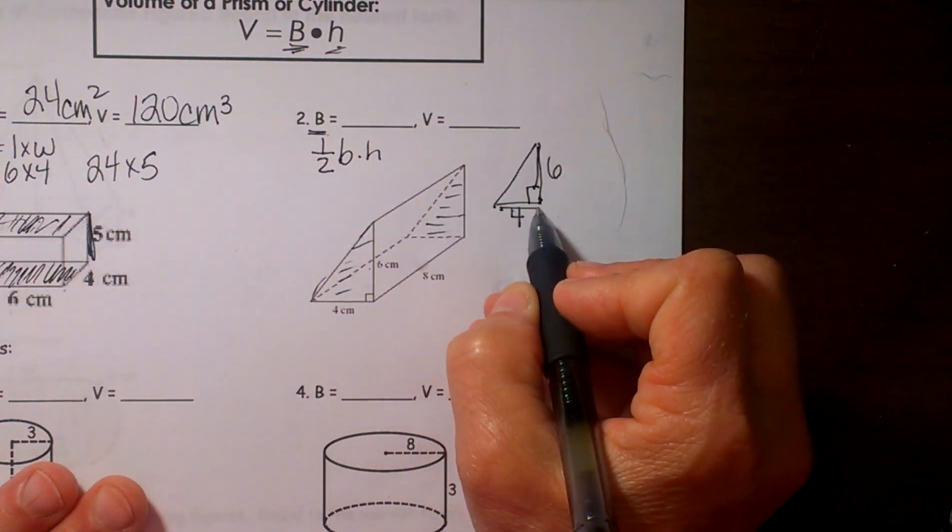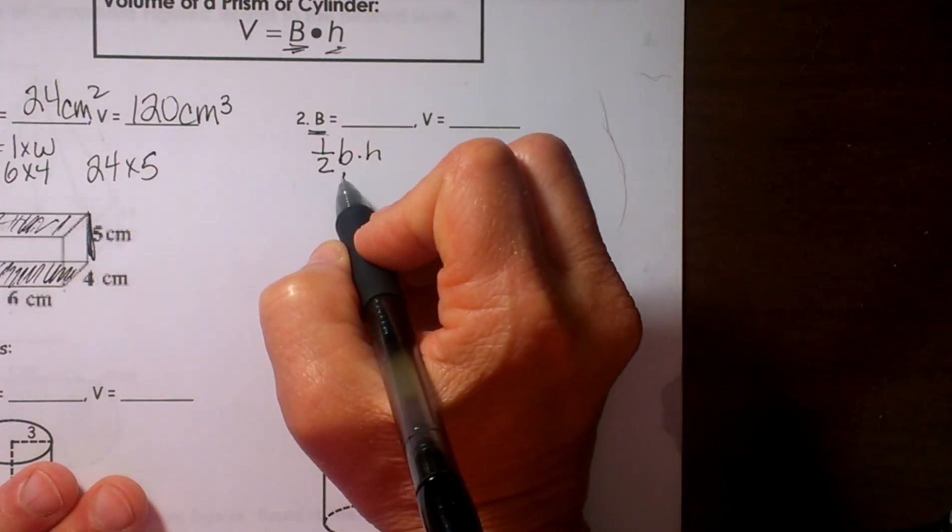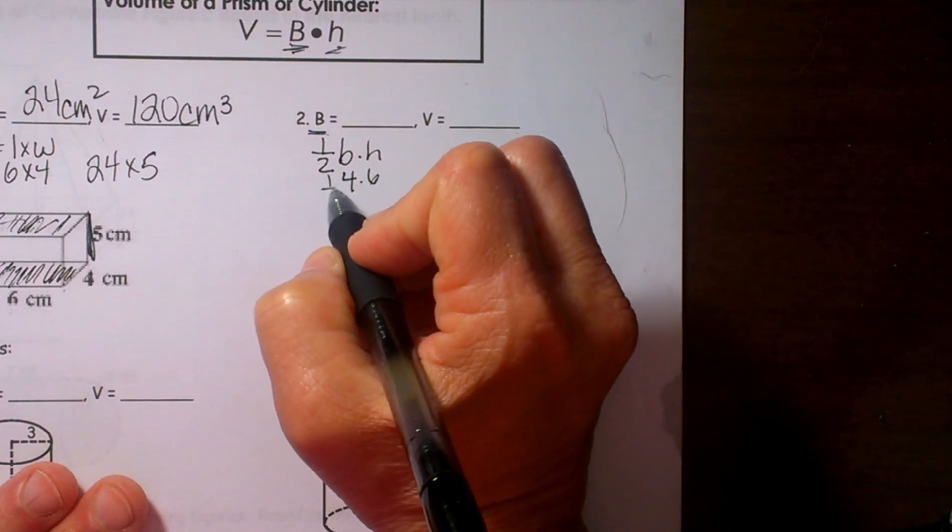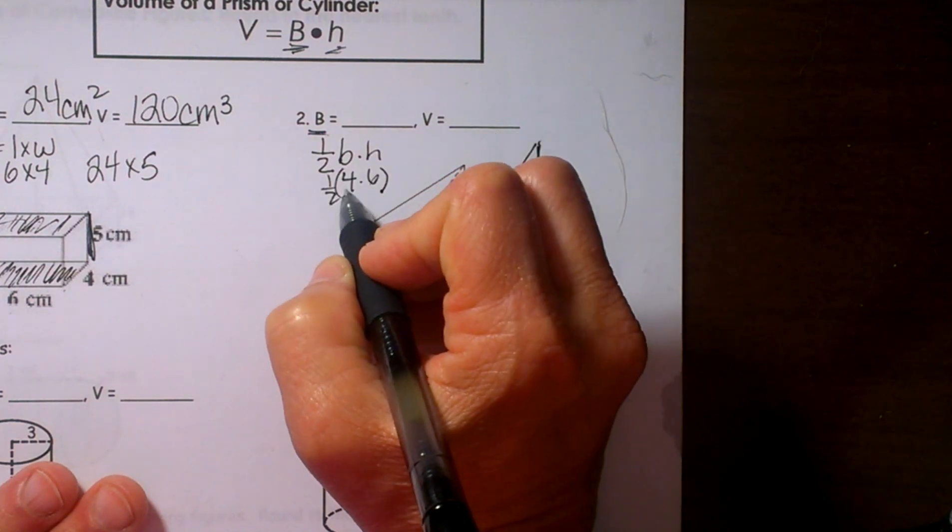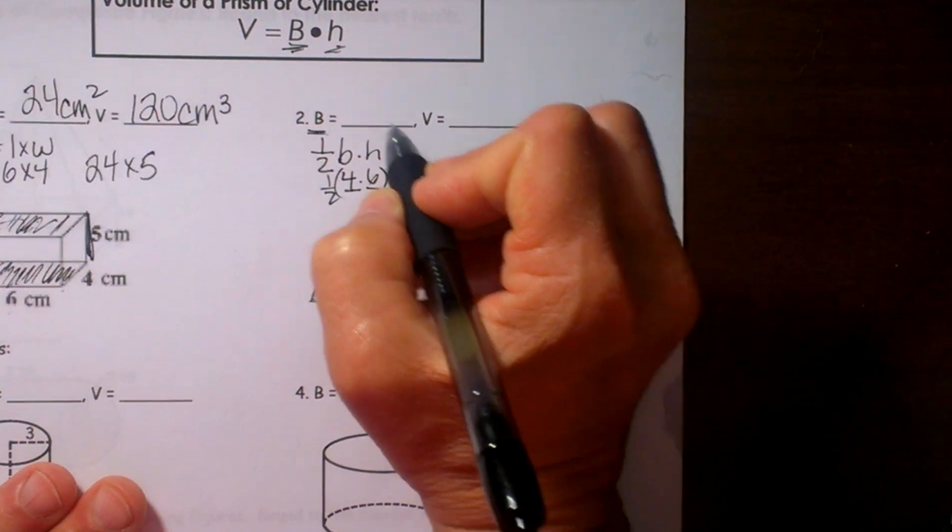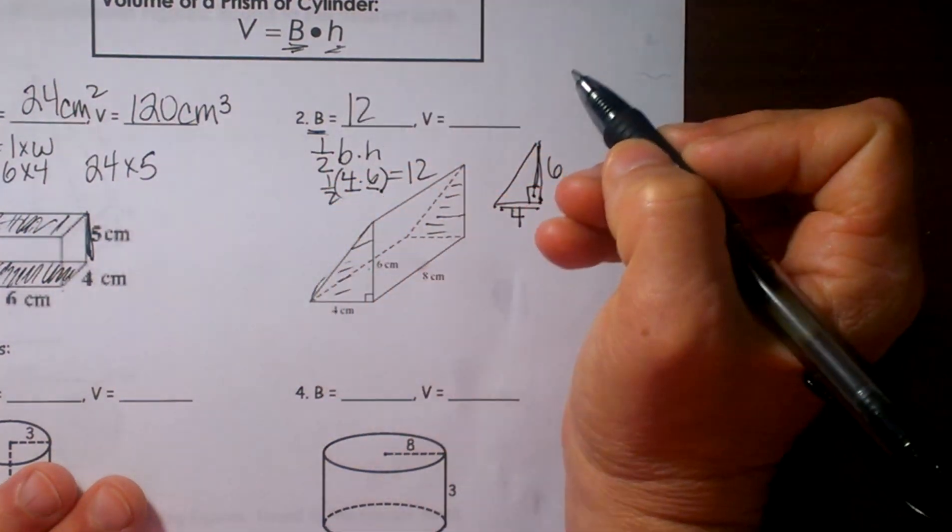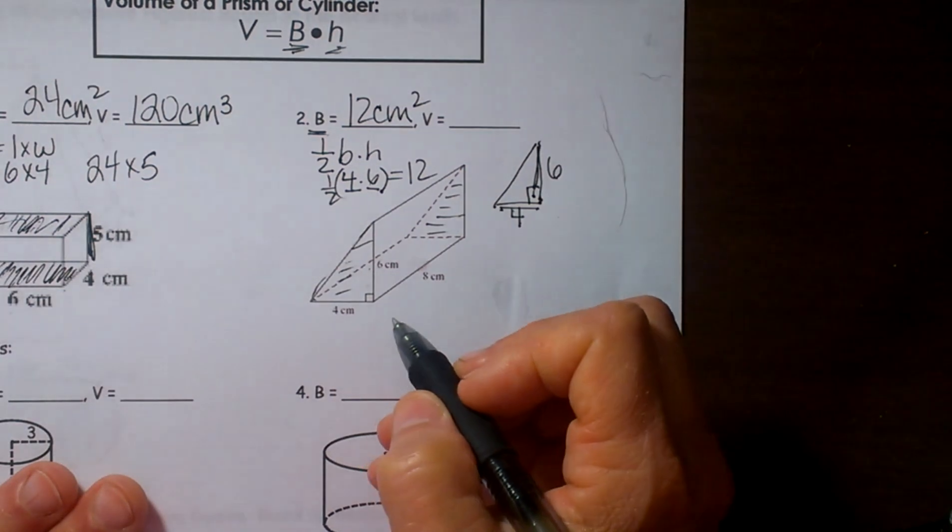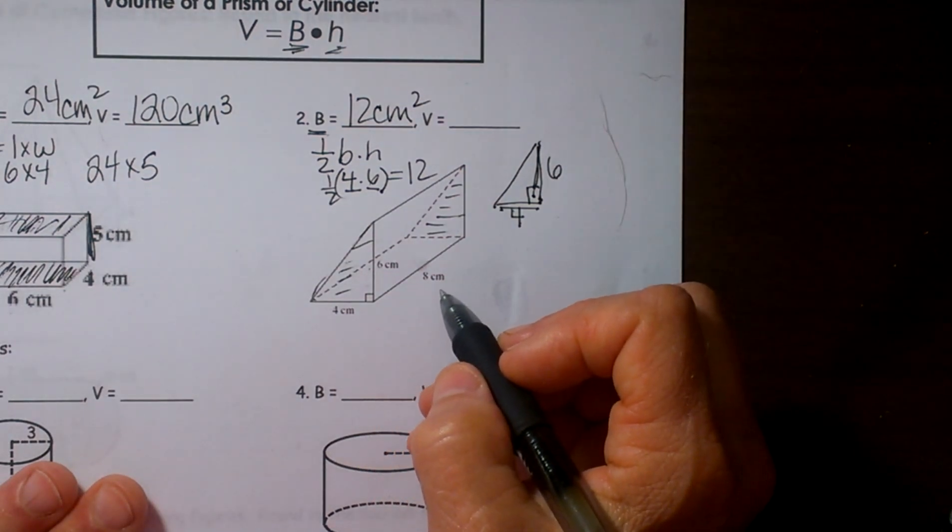So let's take our base and height and multiply it by a half. 1 half of 4 times 6. 4 times 6 is 24 and half of that is 12. So 12 is my base area and then I am going to take that times the height of the pyramid.